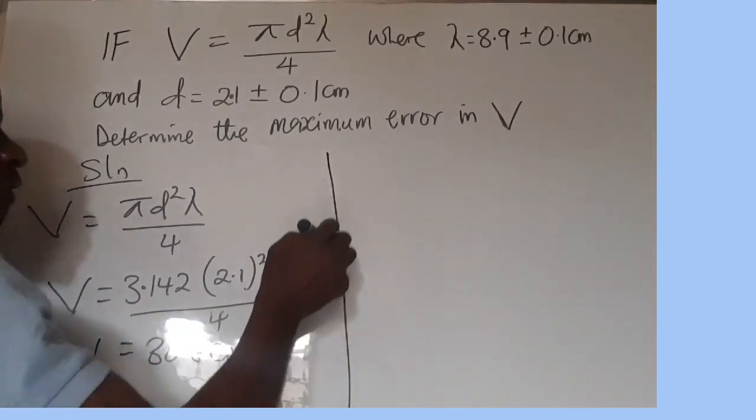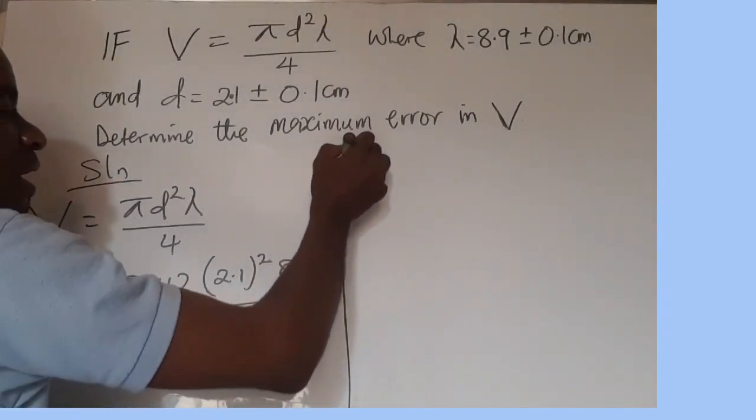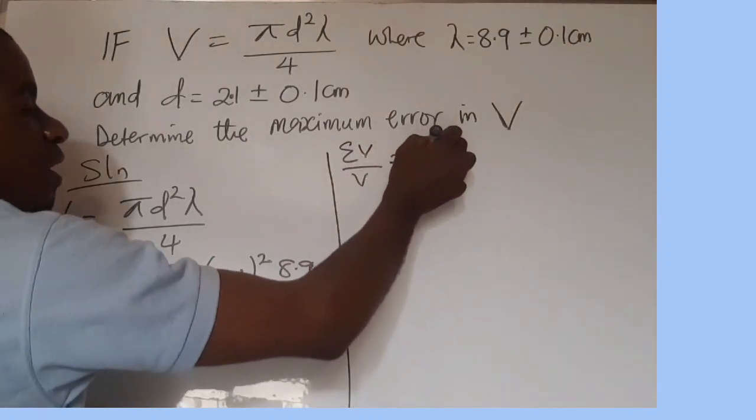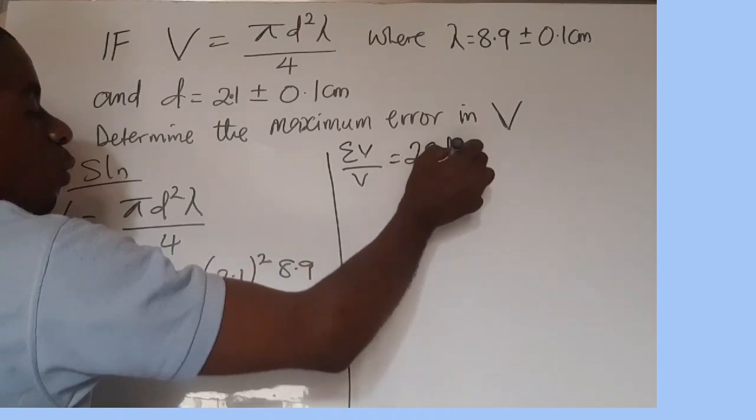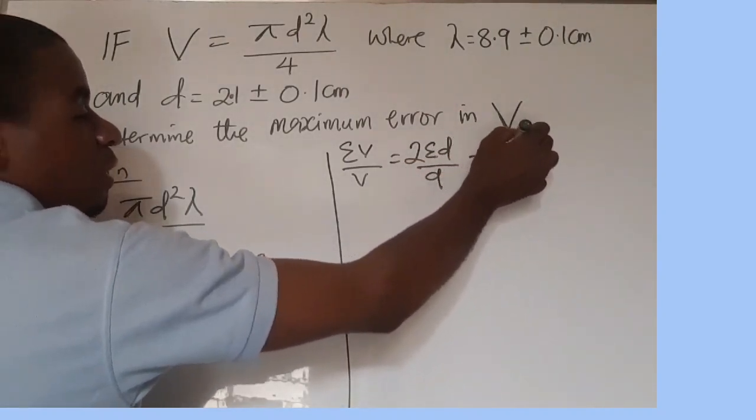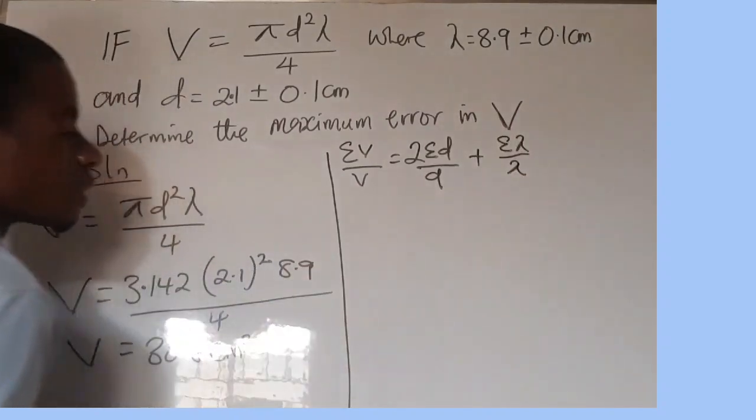So we have to fall back and look for error in V. The error in V all over V is equal to 2 of error in d all over d, plus error in λ all over λ.